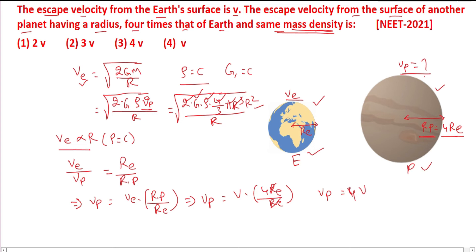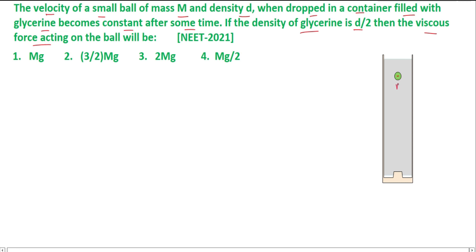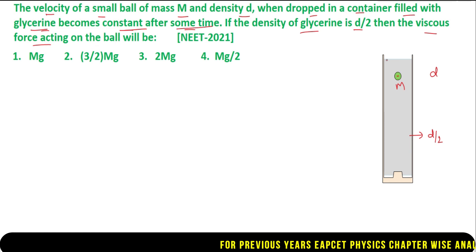Let us move to our next question. The velocity of a small ball of mass M at density d, when dropped in a container filled with glycerin, becomes constant after some time. If the density of glycerin is d/2, then the viscous force acting on the ball will be? He told that he dropped a body of mass capital M with density small d into a container filled with glycerin of density d/2, and after traveling some distance it attained constant velocity.